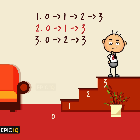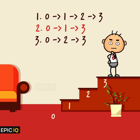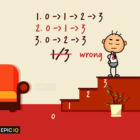Out of these, there is one way in which Ted doesn't visit the second step. So the probability of going to the third step from the floor without visiting the second step is one by three. Can you think of what is wrong with this approach? What do you think will be the correct answer?